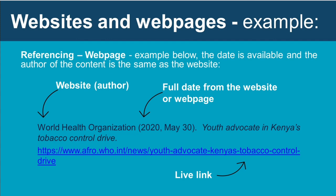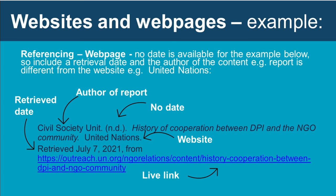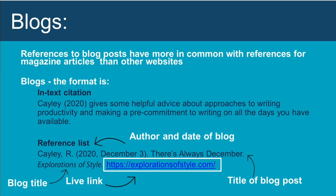You only include the name of the website if it's not the same as the author. For example, if the content was created by the World Health Organization and the website is also the World Health Organization, they are the same — so don't duplicate. But if the Civil Society Unit wrote a piece on the United Nations website, include the United Nations in the reference and then the URL. Blogs are often used as an informal but important means of academic communication, and APA treats blogs more like magazines or periodicals. It is assumed that blogs are archived, so no retrieval date is needed. The example reference shows the author's name, date, title of the blog post, and the name of the blog in italics — similar to a journal title.